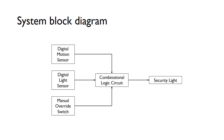That's the block diagram of this system. We've got our three inputs: the digital motion sensor, the digital light sensor, and the manual override switch. They're going to be fed into a combinational logic circuit that we're going to design, and the output will control the actual light itself.